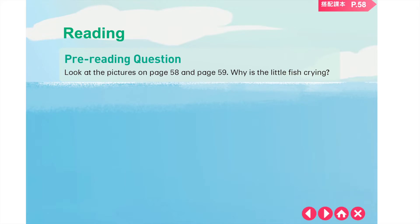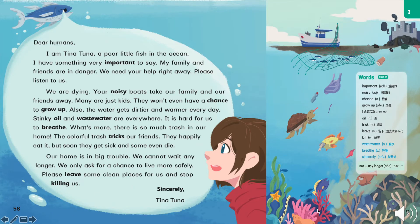在我們開始閱讀之前，先來一個 pre-reading question. Look at the picture on page 58 and page 59. Why is the little fish crying? 我們看到 58 and 59. 這隻魚哭得好用力，淚水也太大滴了吧。再看一下 59 — 這應該是它哭的原因。